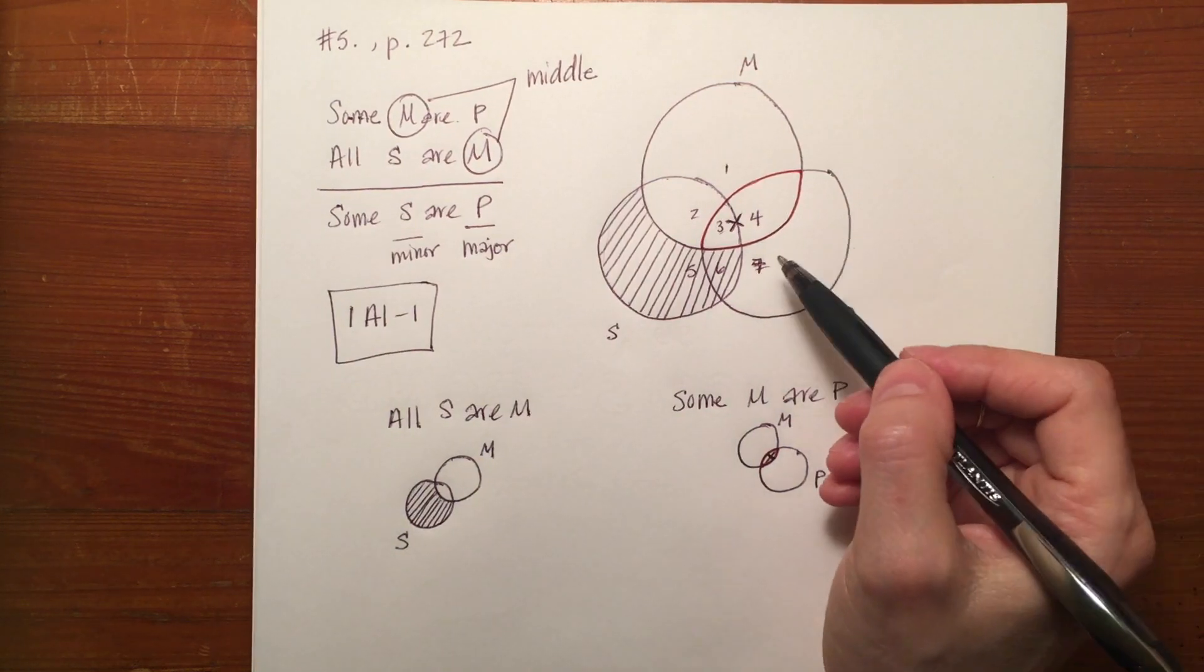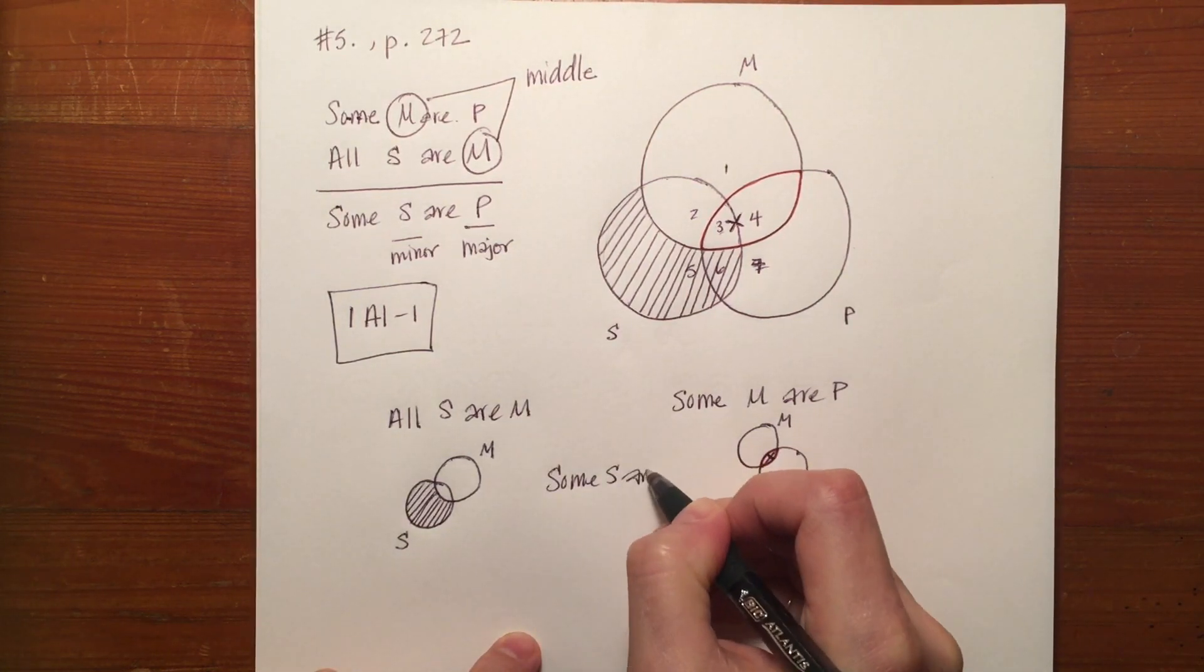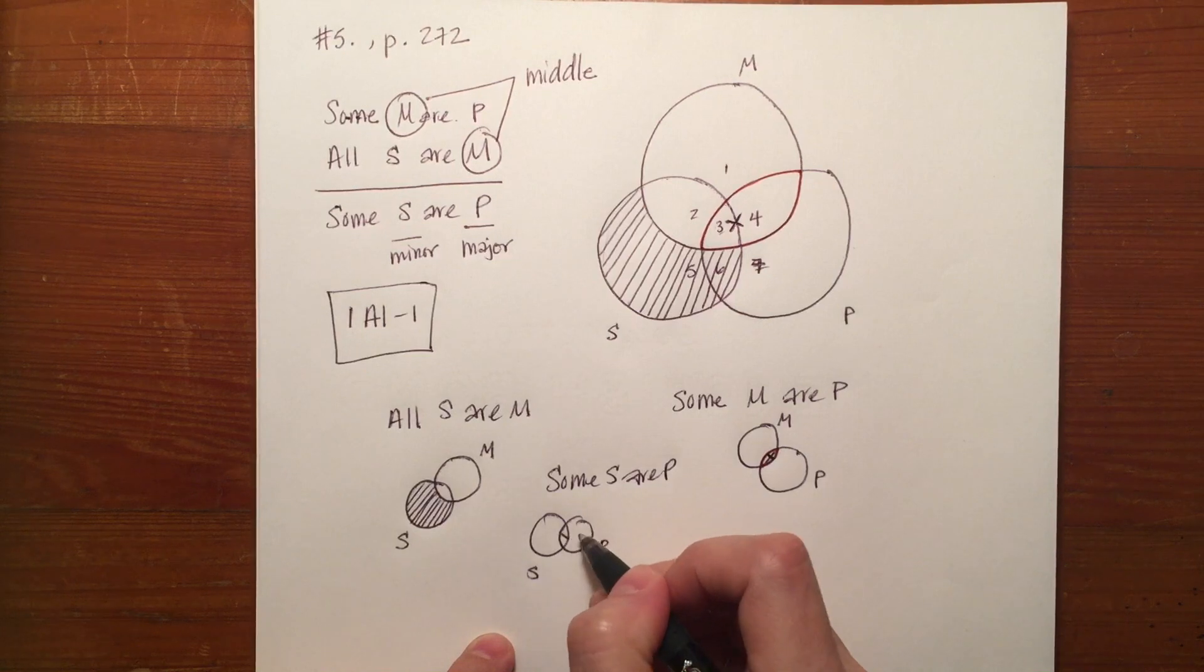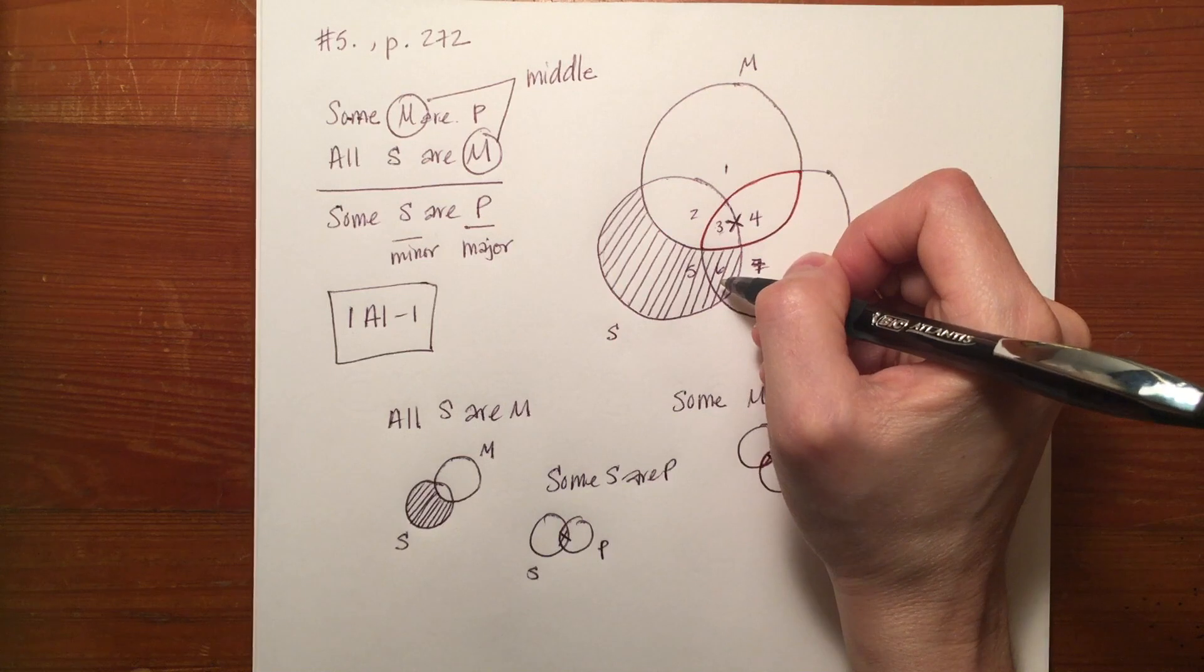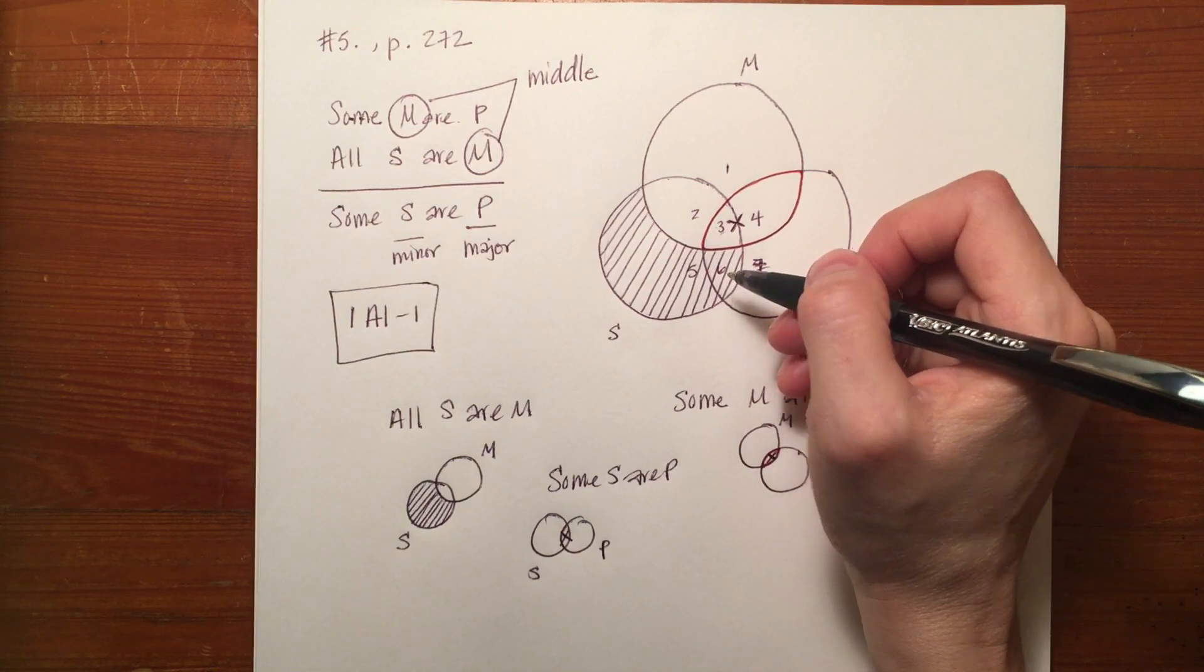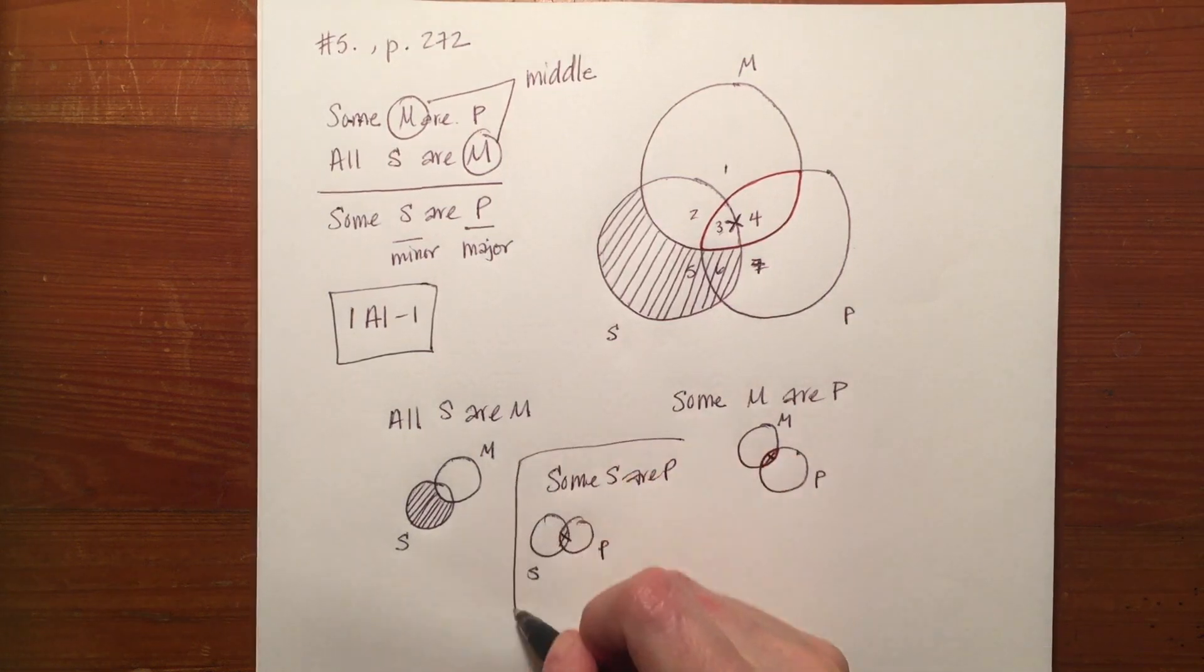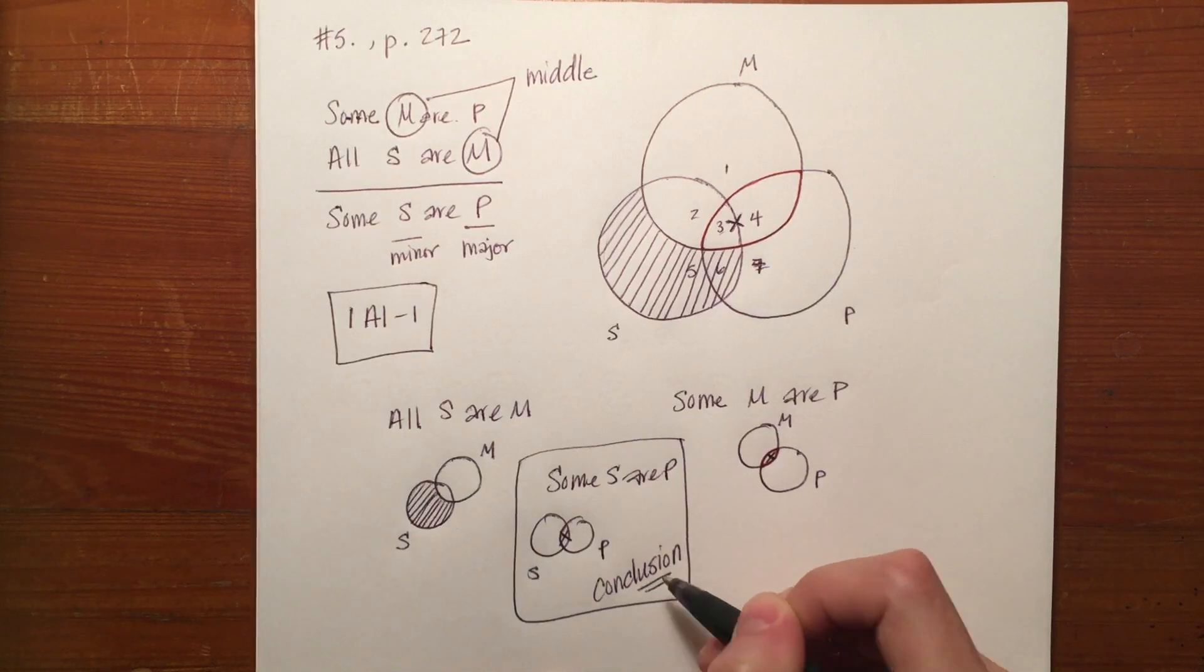Then you can simply take a look at the diagram and determine whether Some S are P. We can draw that out very quickly, Some S are P, we can say okay do we find that information in the diagram? Well, likely not.